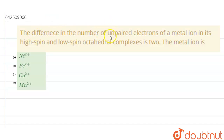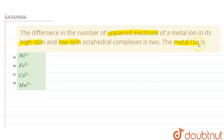The given question says: the difference in the number of unpaired electrons of a metal ion in its high spin and low spin octahedral complexes is two. We have to find the metal ion from the given options.